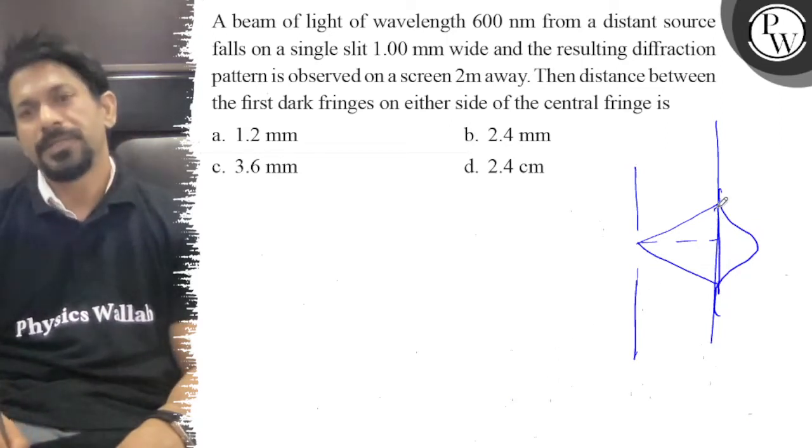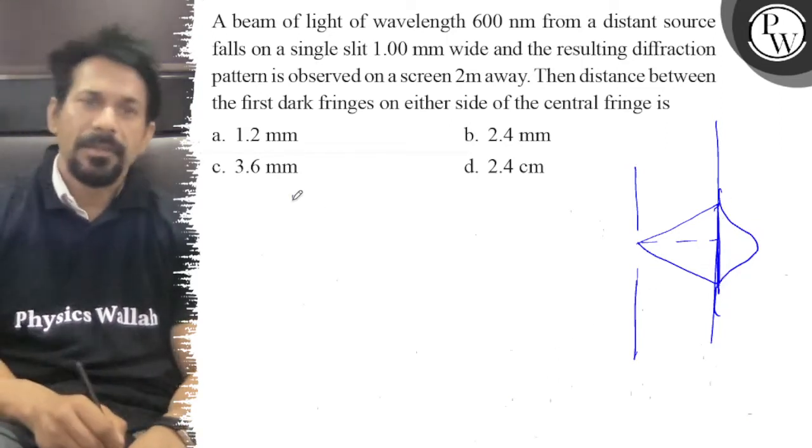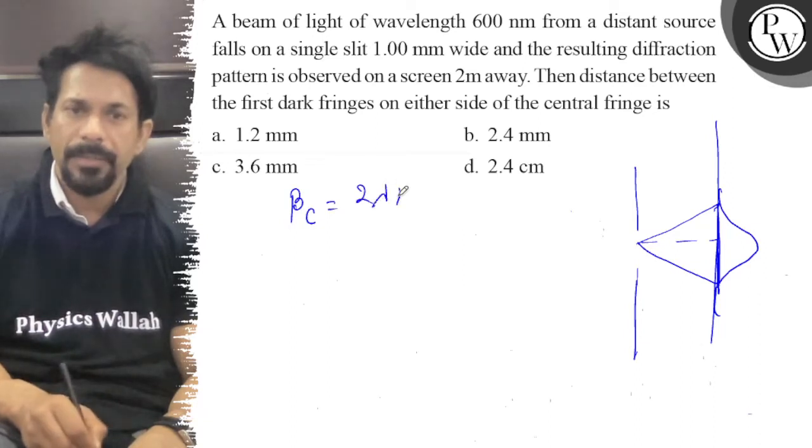So what is this distance actually? That is the width of the central maxima, which is 2 lambda capital D by d.